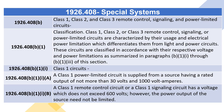1926.408(B) — Class I, Class II, and Class III Remote Control, Signaling, and Power Limited Circuits. 1926.408(B)(1) — Class I, Class II, or Class III remote control, signaling, or power limited circuits are characterized by their usage and electrical power limitation, which differentiates them from light and power circuits. These circuits are classified in accordance with their respective voltage and power limitations as summarized in paragraphs B.1.i through B.1.3 of this section.